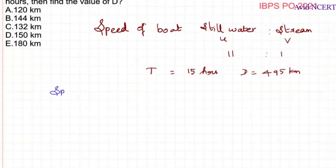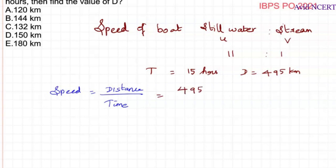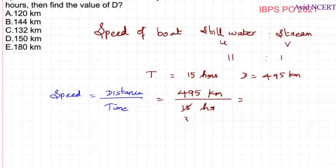Using the formula speed equals distance by time, and substituting the values: 495 kilometers divided by 15 hours. Simplifying: 495 divided by 15 equals 33. So the speed of the boat in still water is 33 kilometers per hour.